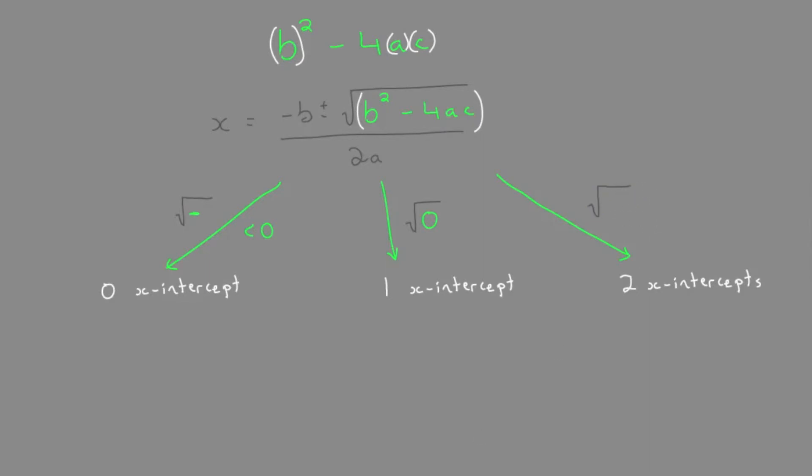And quite often, we have two intercepts. That's when the discriminant under the root is positive, or when b squared minus 4ac is greater than zero. We would have two x-intercepts.